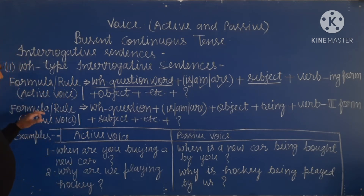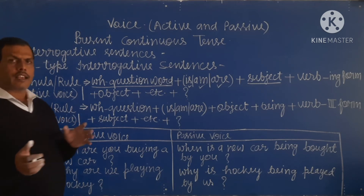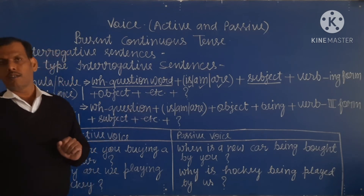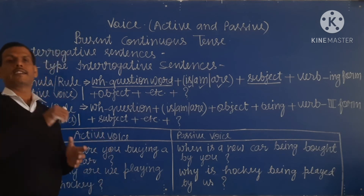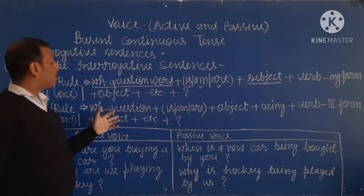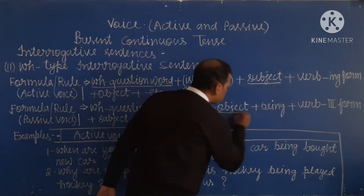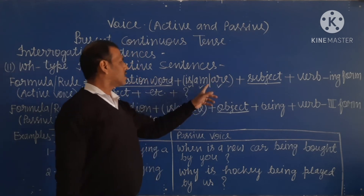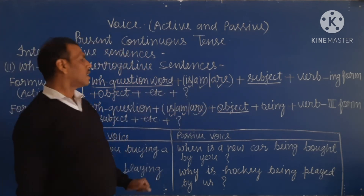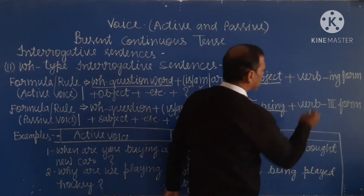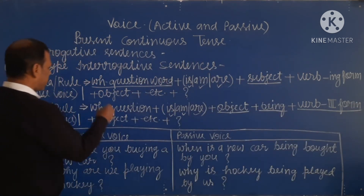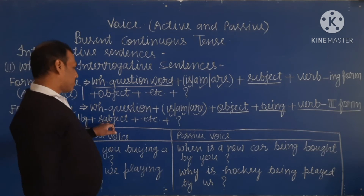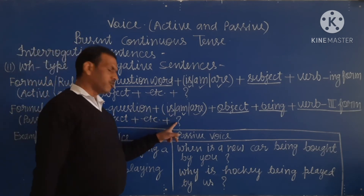Now, for the passive formula of WH type: first we write the WH question word, then 'is' or 'are' according to the object — note that in active we write according to subject, but here according to object. Then we write 'being', then the third form of the verb, then 'by', then the subject in objective case, then etc., and at last a question mark.